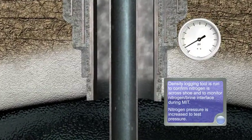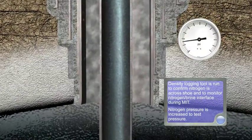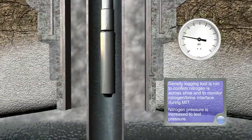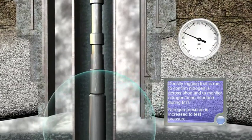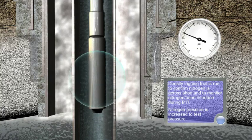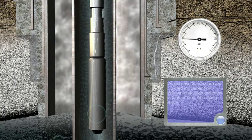Density logging tool is run to confirm nitrogen as a cross shoe and to monitor nitrogen-brine interface during MIT. Nitrogen pressure is increased to test pressure.